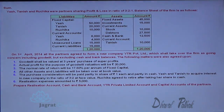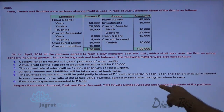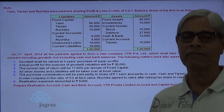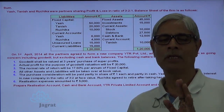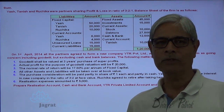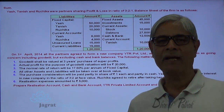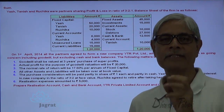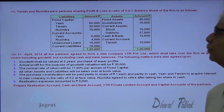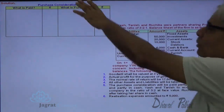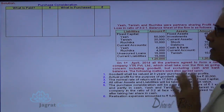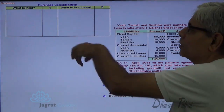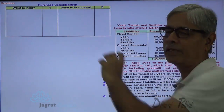Realization expenses amounted to 5,000. We are required to prepare the realization account, cash and bank account, YTR Private Limited account, and capital accounts of the partners. I will first work out the purchase price of the business — the purchase consideration — and write down how the purchase price is paid, in a working note.